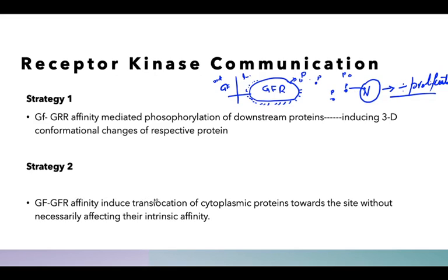The second strategy proposes that the growth factor is actually inducing a translocation of cytoplasmic proteins towards the site of the receptor, without necessarily affecting their intrinsic affinity. The protein itself needs to bind to a growth factor receptor-associated protein.